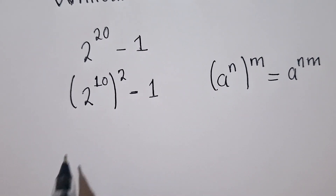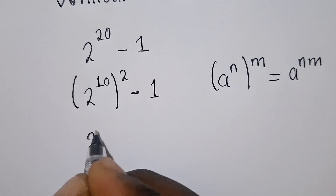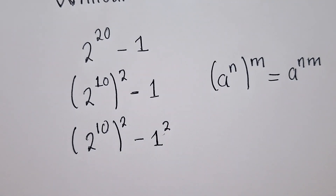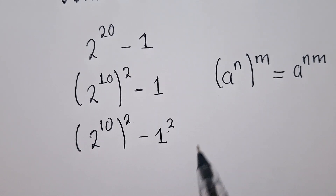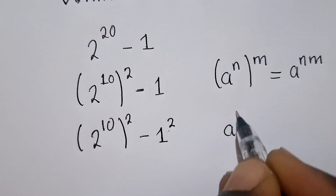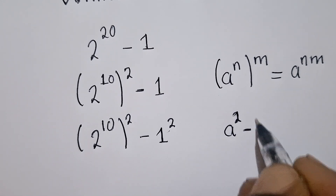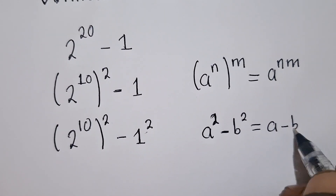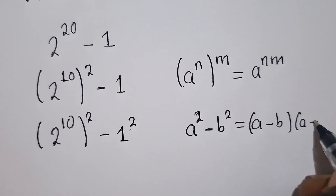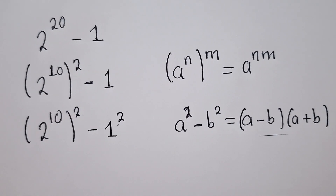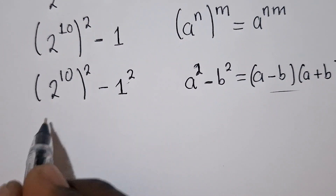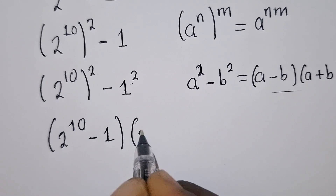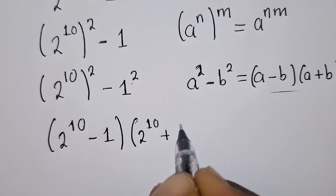At this point, we can write this as (2 power 10)^2 minus 1^2. What is 1 power 2? It just gives us 1. Now we're going to use the property which says a^2 minus b^2 equals (a minus b)(a plus b). So we shall write this as (2 power 10 minus 1) times (2 power 10 plus 1).